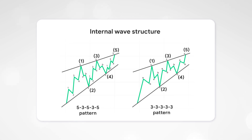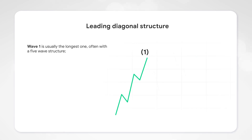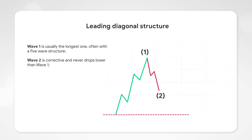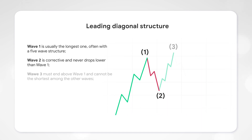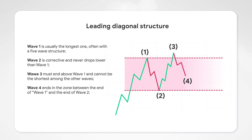Let's consider the basic rules of the formation and confirmation of the pattern in an uptrend. Wave 1 is usually the longest one, often with a five-wave structure. Wave 2 is corrective and never drops lower than the beginning of wave 1. Wave 3 must end above wave 1 and cannot be the shortest among the other waves. Wave 4 ends in the zone between the end of wave 1 and the end of wave 2.